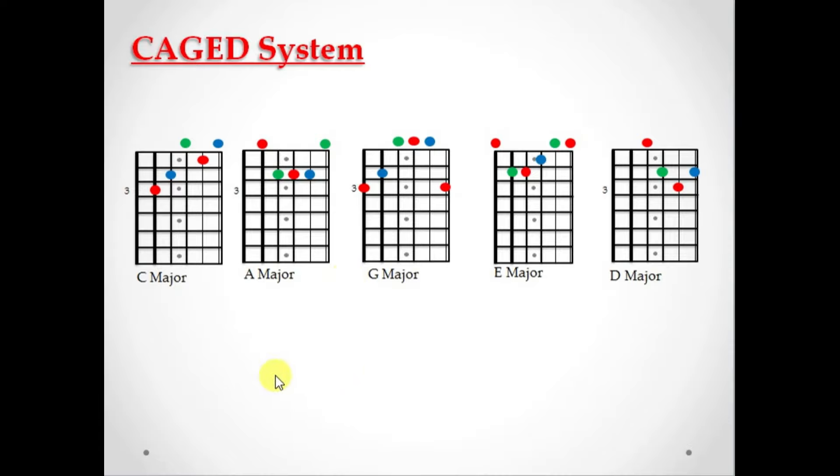So what the CAGED system is, it takes our C major chord, A major chord, G, E, and D. Obviously that spells out CAGED, right? And what it does is it assigns these. These are all a shape now. This is no longer just a C major chord. This is our C shape. This is our A shape, G shape, E shape, and D shape.